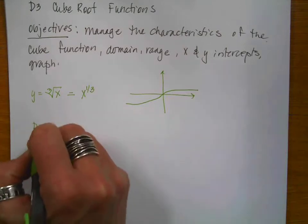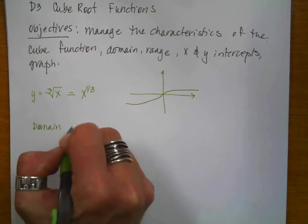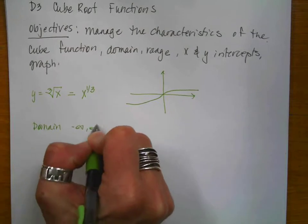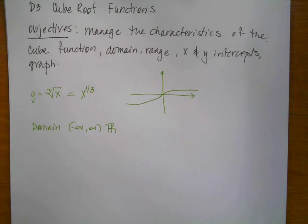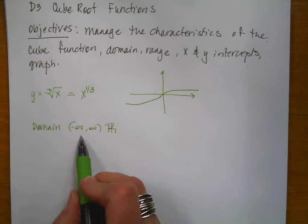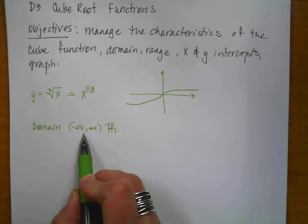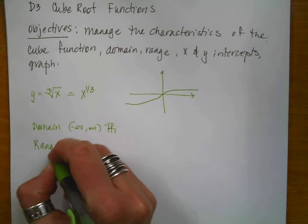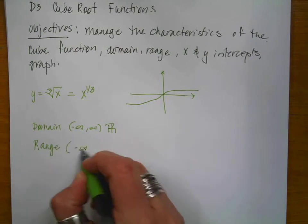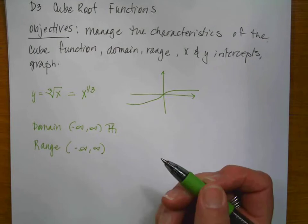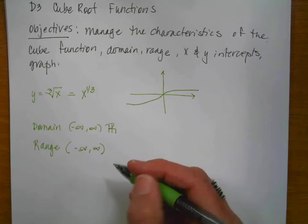So for the domain, it's going to be negative infinity to positive infinity, or we could write all real numbers. Nothing is undefined, so that means all real numbers are our domain. The range, remember we read range from the bottom. The bottom is also going to be negative infinity to positive infinity. It just gets there slowly.